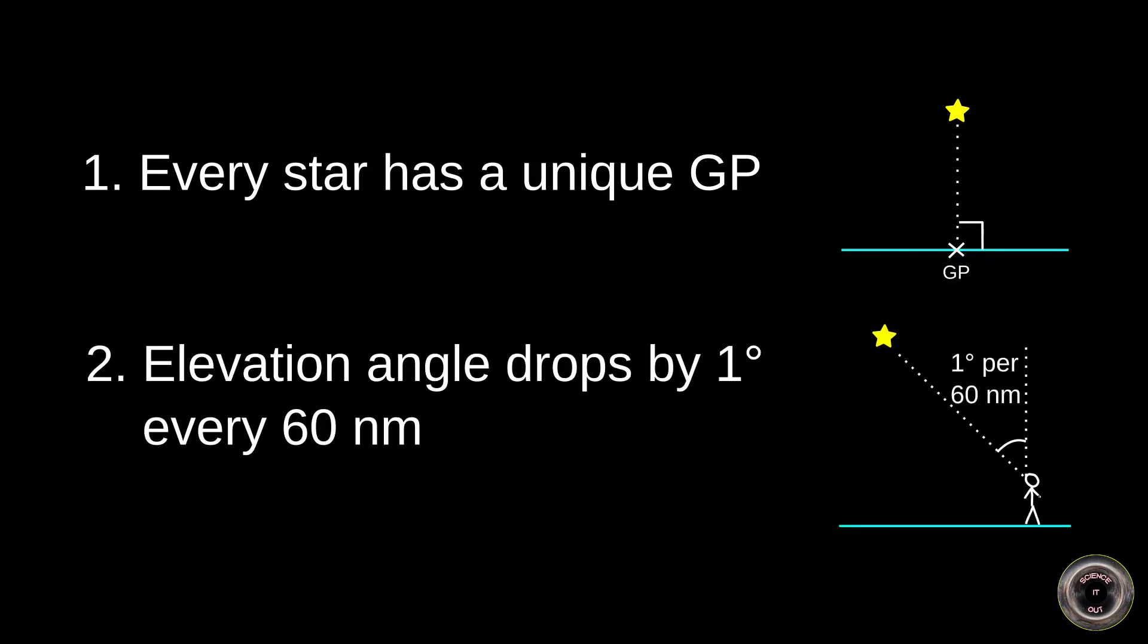Second, for every 60 nautical miles of distance from the star's GP, or 69.1 statute miles, or 111 kilometers, the elevation angle of the star decreases by 1 degree. So if we move by 60 nautical miles from the GP, the elevation of the star will drop to 89 degrees. At 120 nautical miles it will be 88 degrees, and so on.